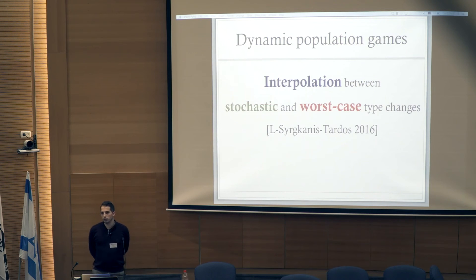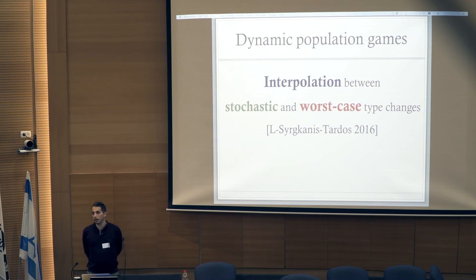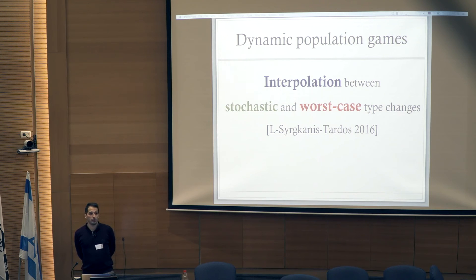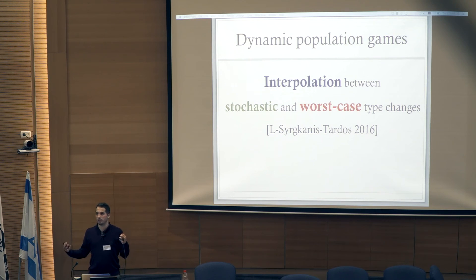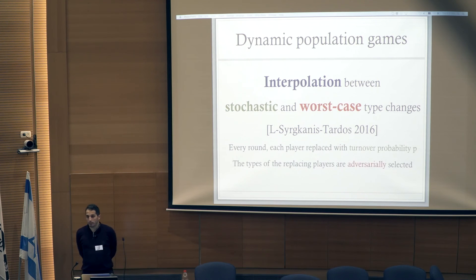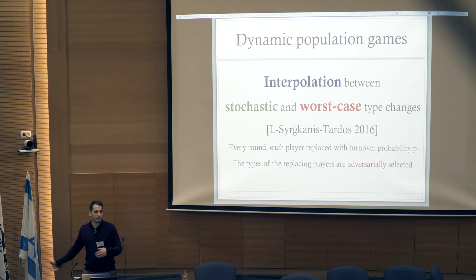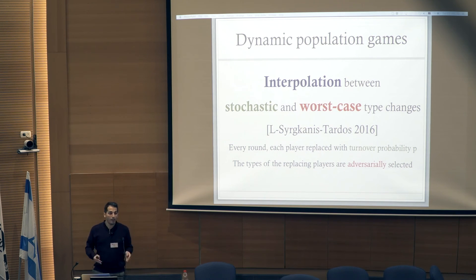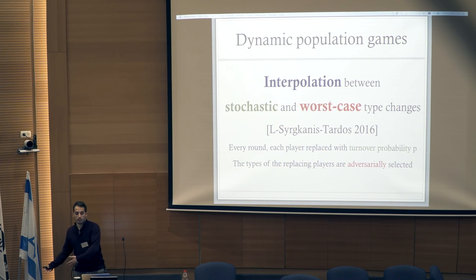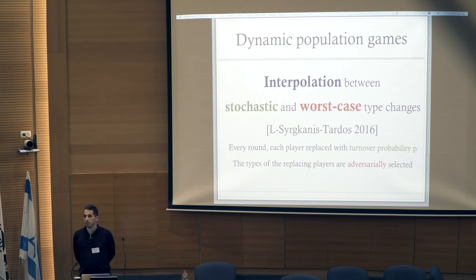I now move to dynamic population games — the setting where the player population is evolving over time. In previous work with Syrgkanis and Tardos, we introduced the notion of dynamic population games, which can be thought of as an interpolation between stochastic and worst-case changes. Every step, each player tosses a coin: with probability p their type is changed (stochastically timed), but the new types arriving are worst-case.